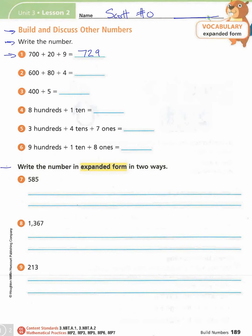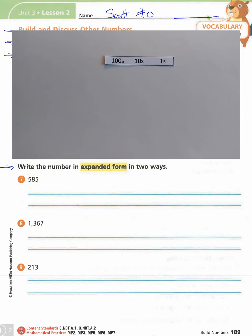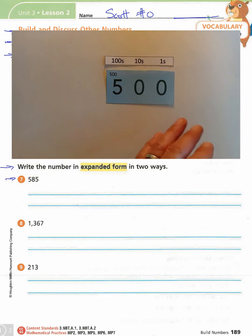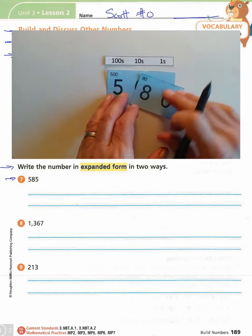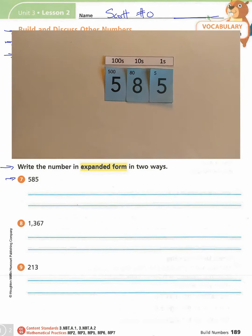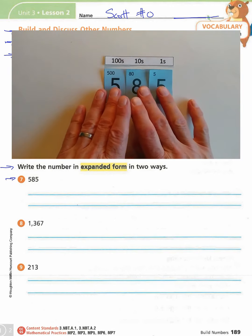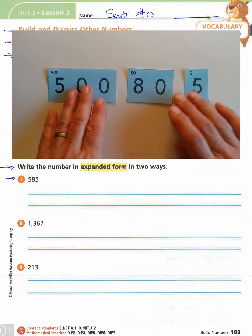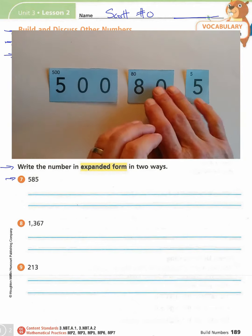Now we're coming down to the next section. You'll use your secret code cards to start where we left off. For number seven, I need my 500 card, my 80 card — get them lined up — and then my 5 card. They're wanting us to start with the cards together and then expand them, which is why they call this expanded form. We take the cards apart, and now we've expanded 585.